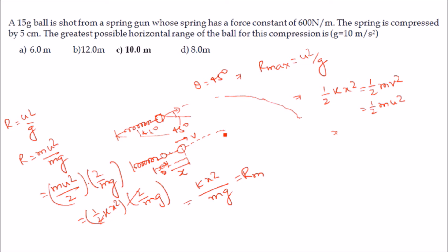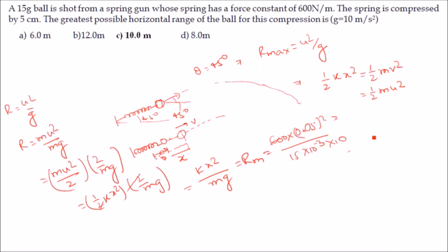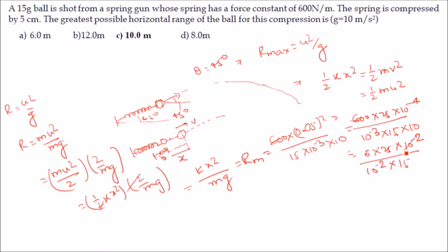Substituting values: k = 600, x = 5 cm = 0.05 m, m = 15 g = 15×10⁻³ kg, g = 10 m/s². So R = 600 × (0.05)² / (15×10⁻³ × 10) = 600 × 25×10⁻⁴ / (15×10⁻²) = 10 meters. The maximum possible horizontal range is 10 meters.